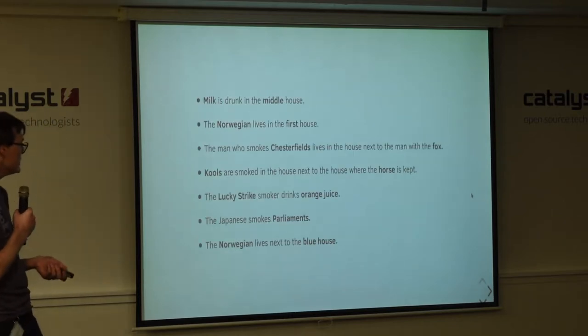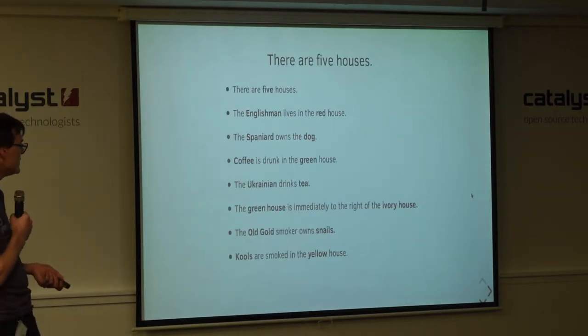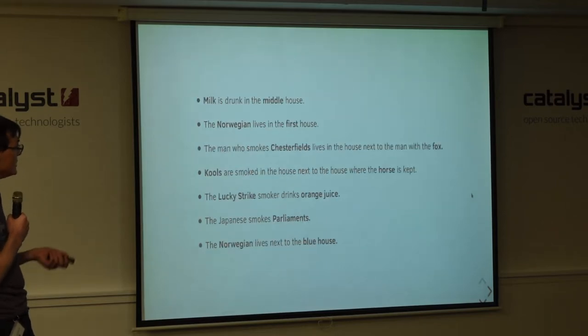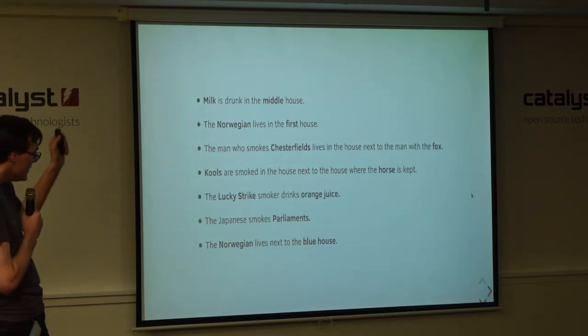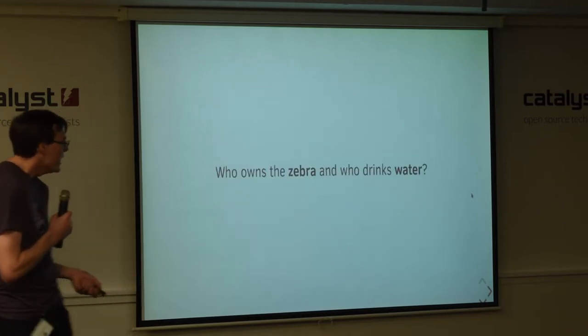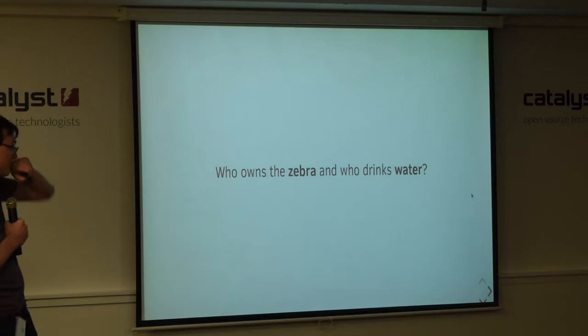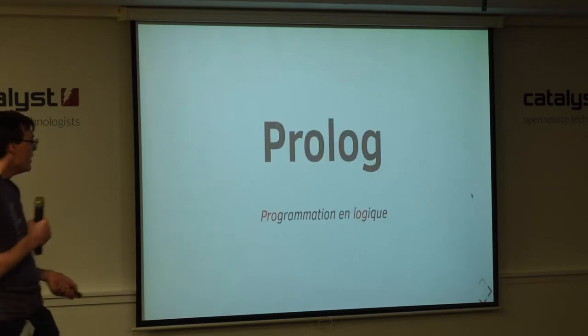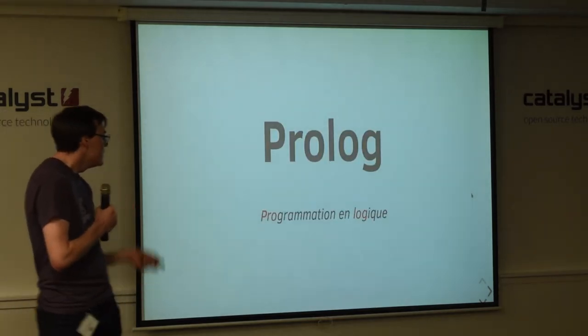Now, if you notice through all of the constraints there, there's no mention of zebra and no mention of water. So we're going to try and figure out, deduce from all of these facts, who might own the zebra and who might drink the water. So, I want to introduce Prolog.